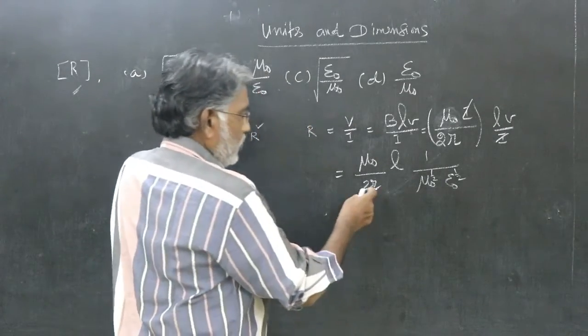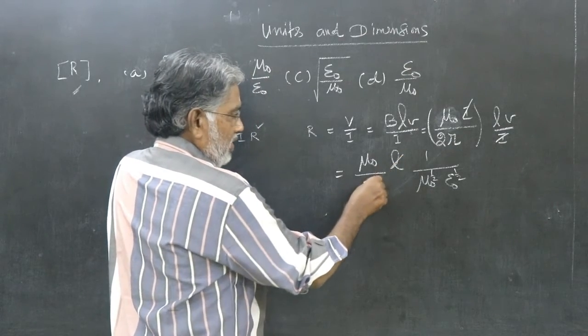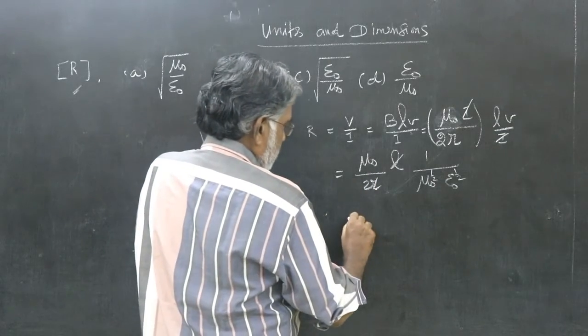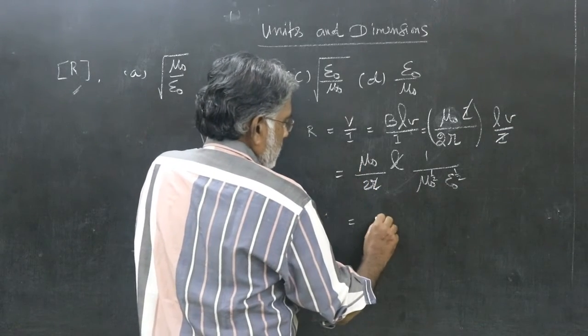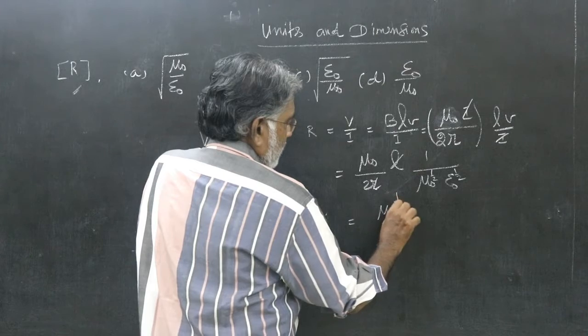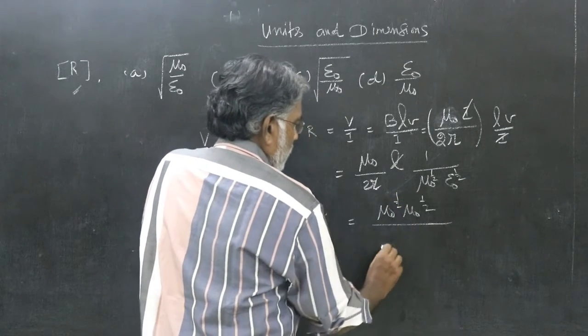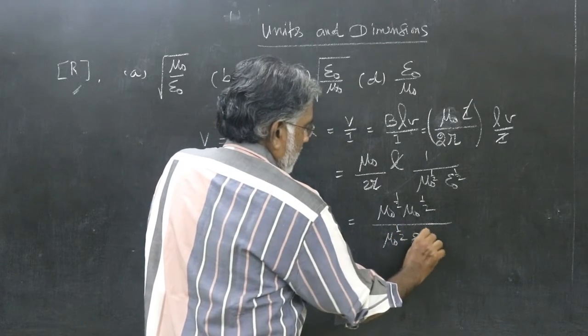Now you see dimension wise, L and R will cancel. Dimension wise. Both will have same dimension. Now you see this. Mu naught is mu naught half into mu naught half by mu naught half here into epsilon naught half.